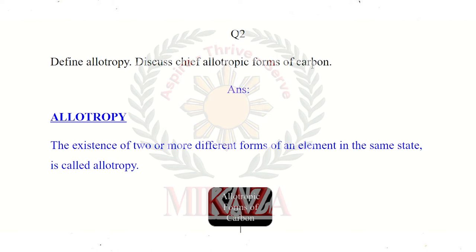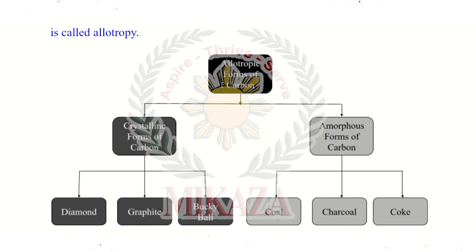The allotropic forms of carbon are crystalline and amorphous. Crystalline means the chemical structure is in a geometric shape, like square, triangle, circular, hexagon, or pentagon — known as geometric shapes. If carbon arrangement is in that form, it is known as crystalline form. If it is in an irregular shape — i.e., no specific geometric shape — like a powder, it becomes amorphous form.